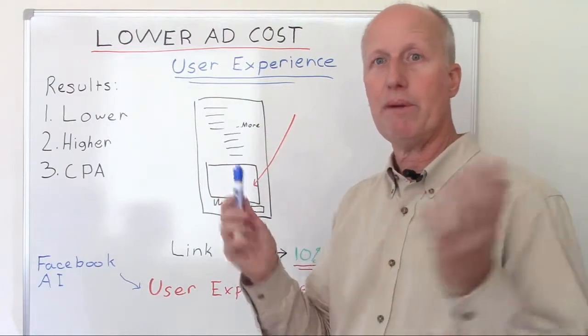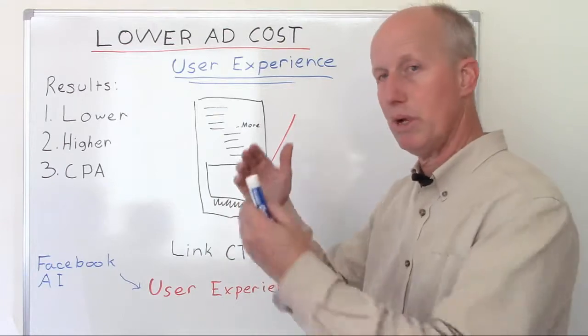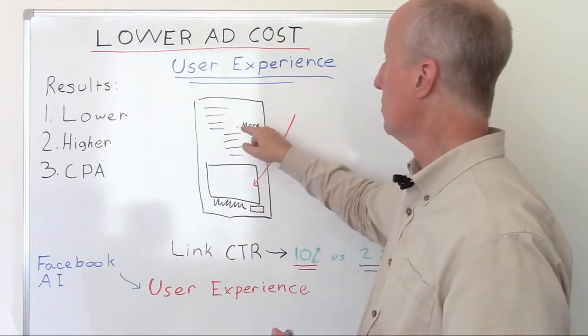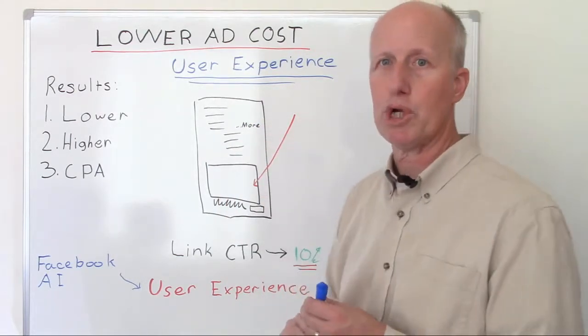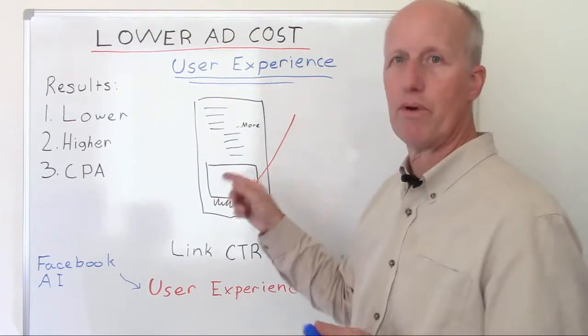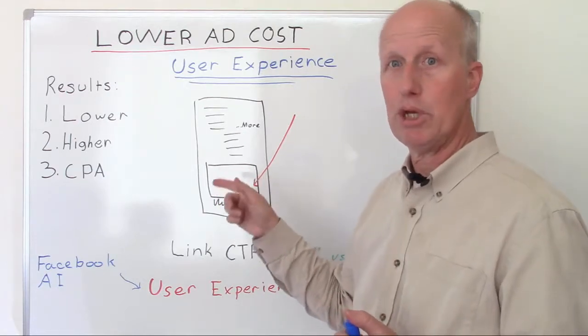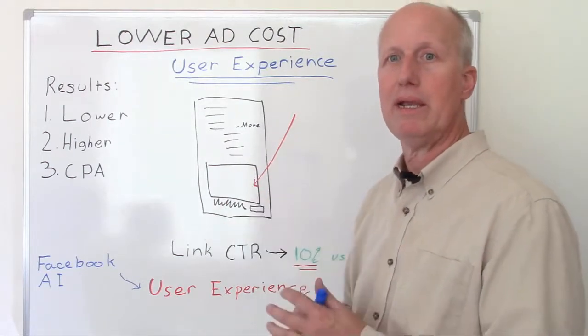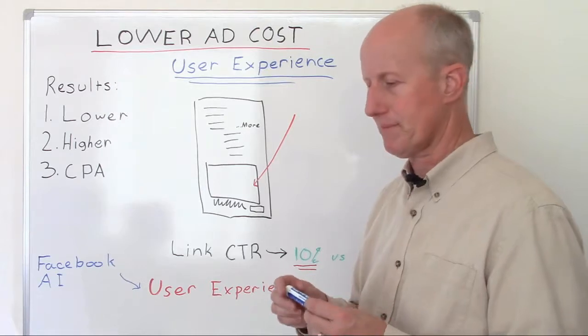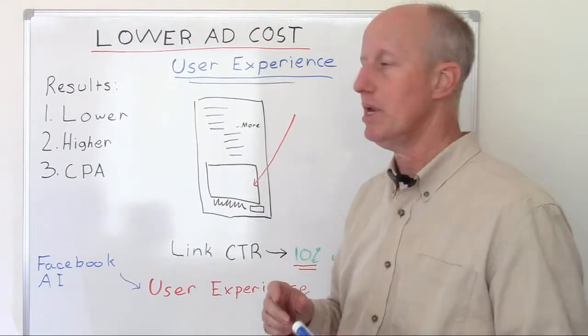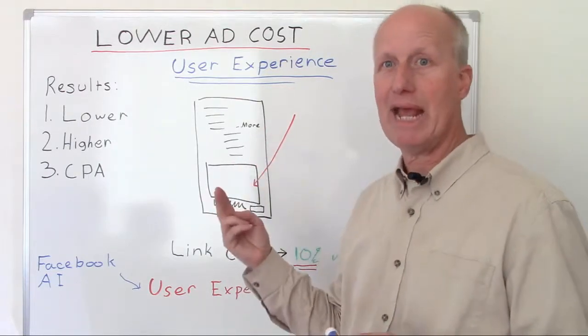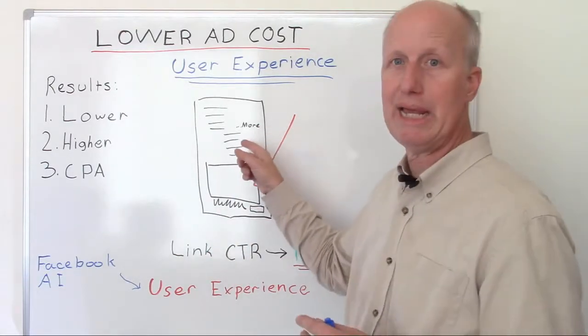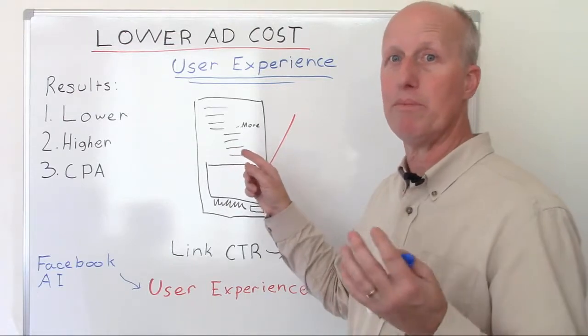One of the things that should be tested is the use of the more button. Once you get past I think it's five lines, four lines, this little 'more' M-O-R-E will show up in the ad text. For a potential customer, a Facebook user, in order to see the rest of your long ad copy they have to click this more button. When they do that, it's tracked as part of the metrics as a piece of engagement.